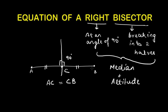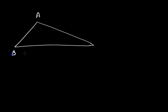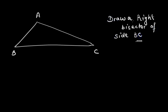Now let's say we want to draw a right bisector for a triangle ABC, specifically for side BC. When asked to draw a right bisector of any side of a triangle, we need not make it pass through the opposite vertex, because that would be difficult for a scalene triangle. The right bisector must fall at 90 degrees to BC and cut BC into two equal halves.